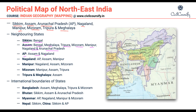Arunachal Pradesh has Assam and Nagaland as neighbors. Nagaland has Arunachal Pradesh, Assam, and Manipur. Manipur has Nagaland, Assam, and Mizoram. Mizoram has Manipur, Assam, and Tripura. Tripura and Meghalaya have Assam as their sole neighboring state within the northeast.